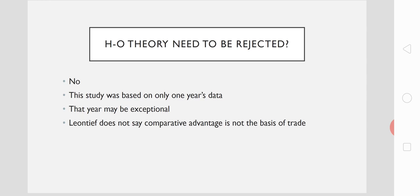Moreover, Leontief's study was based on just one year's data — he studied US trade data for 1947 only. That year may have been an exceptional year, and we cannot rule out that possibility. A study based on just one year of data is not able to rule out a well-established theory of trade.